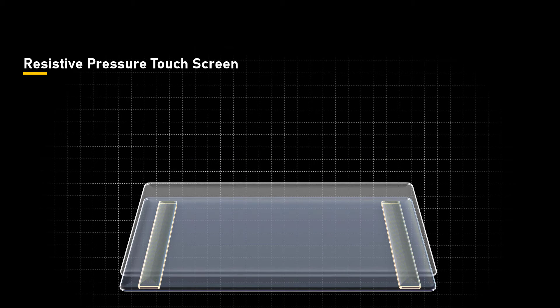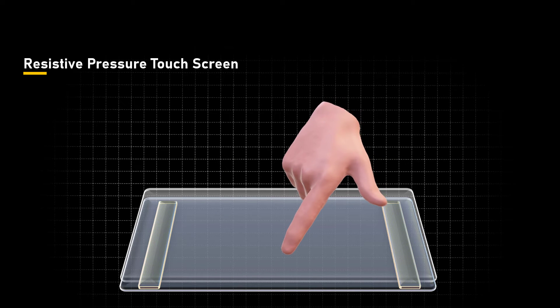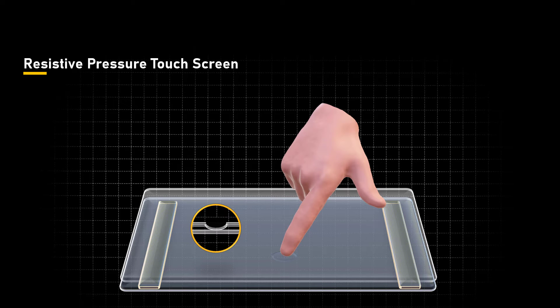In the resistive pressure sensing touchscreen, which is the example we are using in this lesson, the touchscreen consists of multiple layers with two conductive layers separated by a spacer. When subject to pressure, the circuit is closed due to the contact between the layers resulting in voltage drop. This helps to detect the location of the touch.